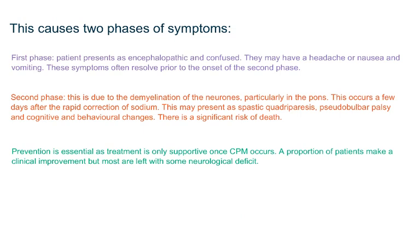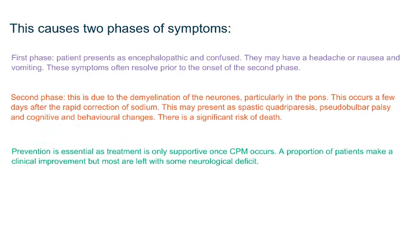This causes two phases of symptoms. In the first phase, patients present as encephalopathic and confused; they may have a headache or nausea and vomiting. These symptoms often resolve prior to the onset of the second phase, which is due to the demyelination of the neurons, particularly in the pons — hence the name central pontine myelinolysis. This occurs a few days after the rapid correction of sodium and may present as spastic quadriparesis, pseudobulbar palsy, and cognitive and behavioral changes. Prevention is essential, as the treatment of central pontine myelinolysis is only supportive and a large proportion of patients either die or are left with some neurological deficit.